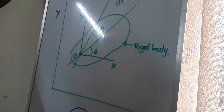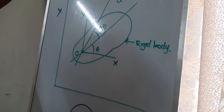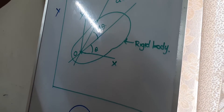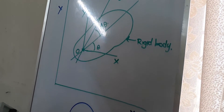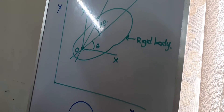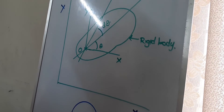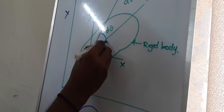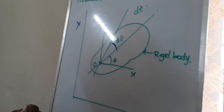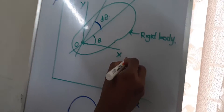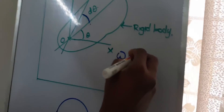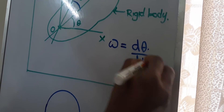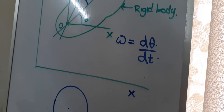Now we will discuss two important parameters in rotation: angular velocity and angular acceleration. Angular velocity is the rate of change of angular displacement. In this case the angular displacement is d-theta, so angular velocity omega can be written as d-theta by dt.